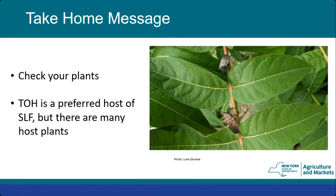Take-home messages for tree of heaven: check your plants for signs of damage, sooty mold, and honeydew. Tree of heaven is the preferred host of spotted lanternfly, but there are over 100 host plants they feed on — tree of heaven is just their favorite, like a steak preference. But if tree of heaven isn't around, they will feed on other plants.